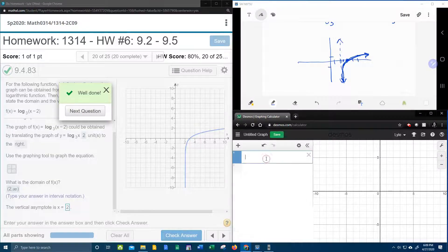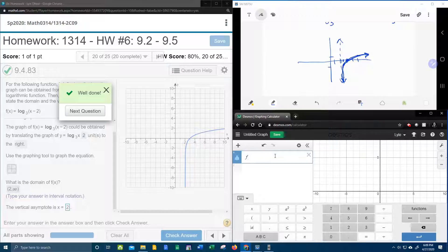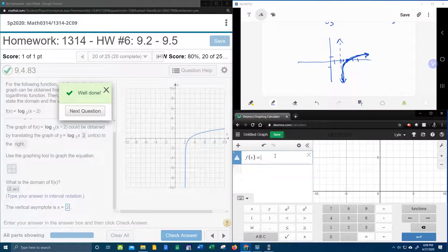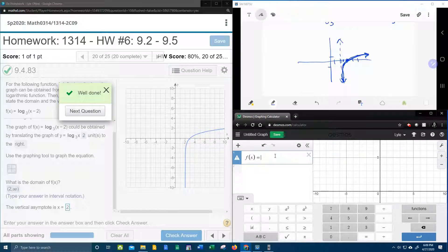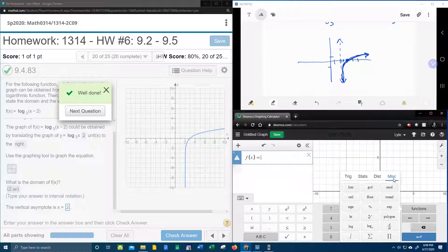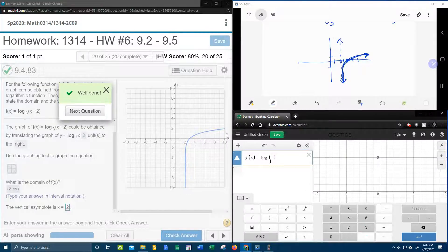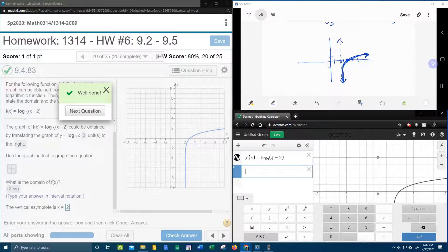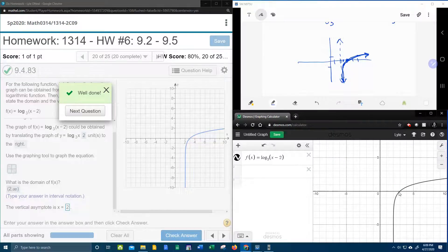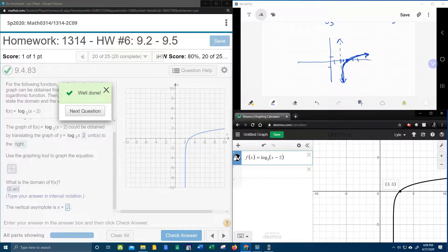And now we're going to check electronically. F of x equals, oh I forgot. We're going to have to do a function, function miscellaneous log base 3 of x minus 2. And again that graph, which has an x intercept of 3 matches this graph, matches this graph. So that all matches.